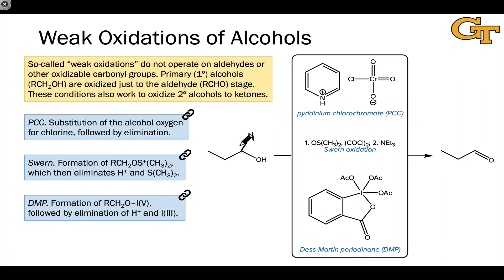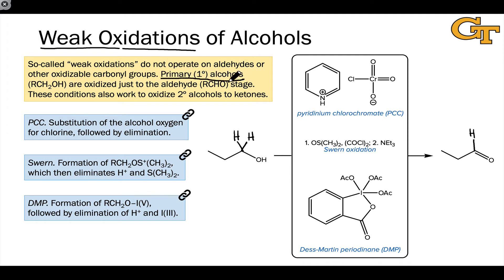If we want to halt the oxidation of a primary alcohol at the aldehyde stage, we can't use a strong oxidizing agent like chromic acid. We have to use what's called a weak oxidation protocol. These conditions don't operate on aldehydes — reaction with aldehydes is either extremely slow or nonexistent. So primary alcohols are oxidized selectively to the aldehyde stage. These conditions also work to convert secondary alcohols to ketones. There are three sets of conditions we'll look at in this video in detail.